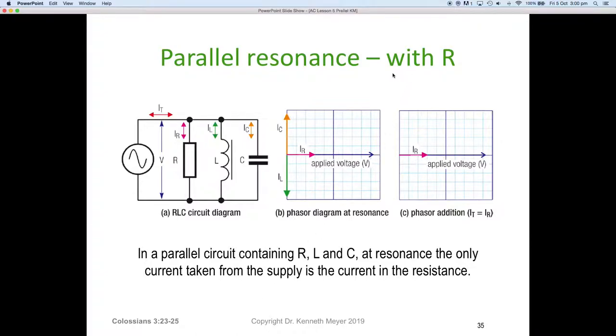But what happens now if we add some resistance? So look at our circuit diagram. We have a pink current through the resistor, a green current through the inductor, an orange current through the capacitor, and I total is in red. If we look at our phasor diagram, IC and IL are the same value. I can tip to tail the IC on the IL and come back to zero. I'm effectively going to end up with phasor addition where IT equals IR. So the only component in the circuit is the current in the resistor.